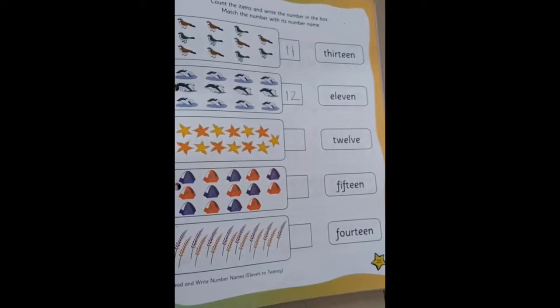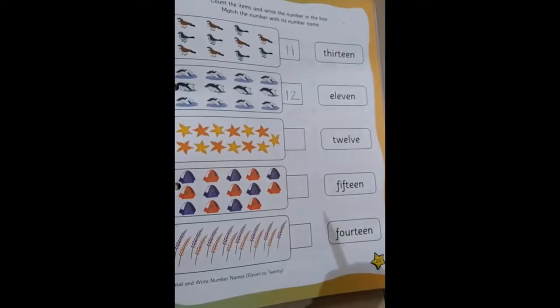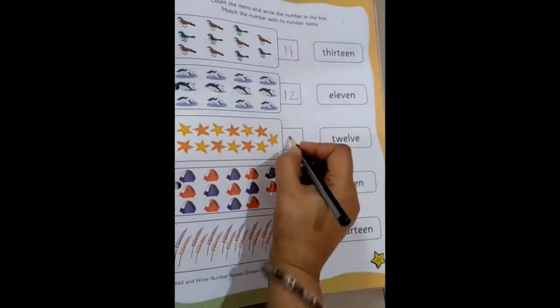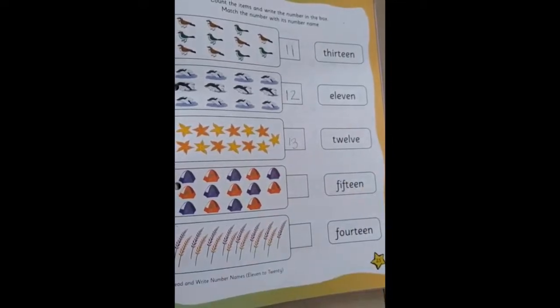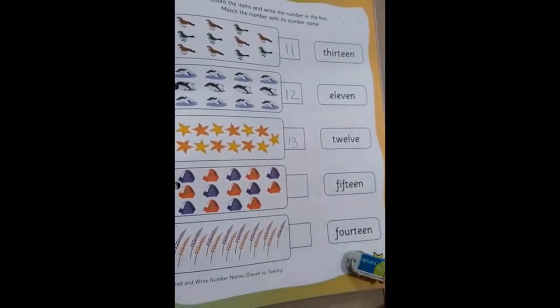The next one, the starfish: 1, 2, 3, 4, 5, 6, 7, 8, 9, 10, 11, 12, 13. So 13 starfish are there. We write 13. Moving on to the next one. Oh, my 3 is not proper, so I will use an eraser.